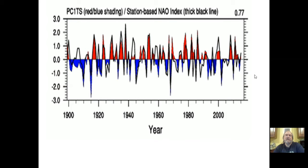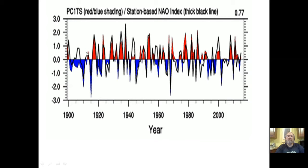This second chart narrows the range from 1900 to about 2016. The thick black line is the station-based NAO index, and the red-blue shading represents another group's data. Again, you can see how it flips back and forth — that's what this is showing.